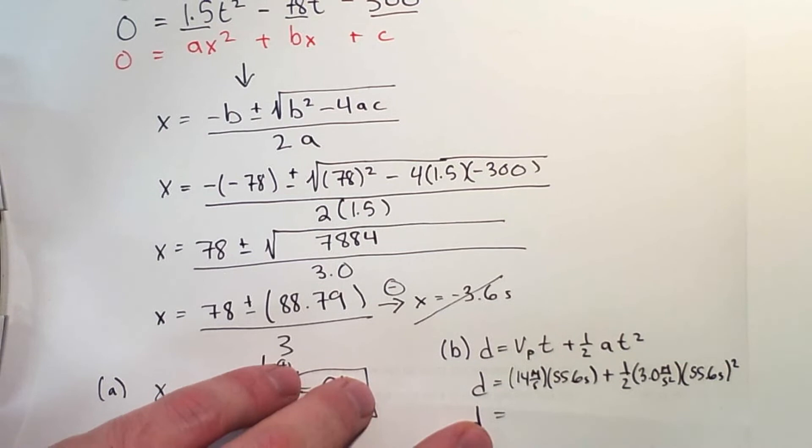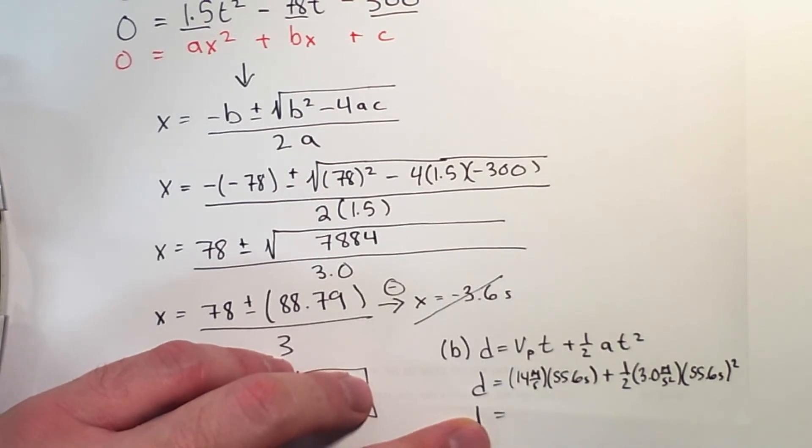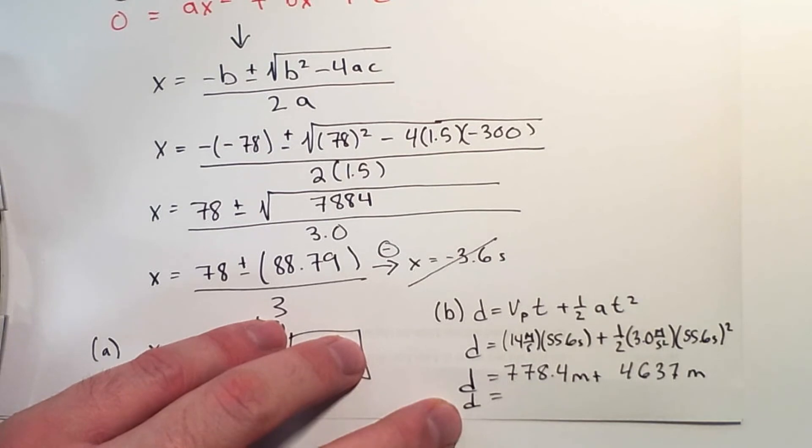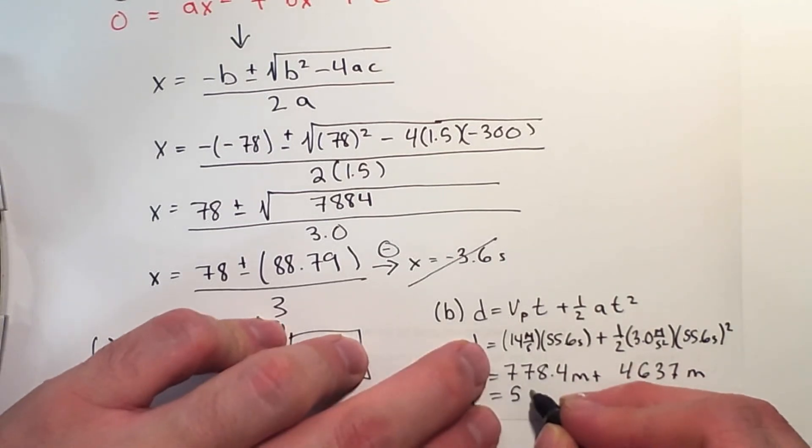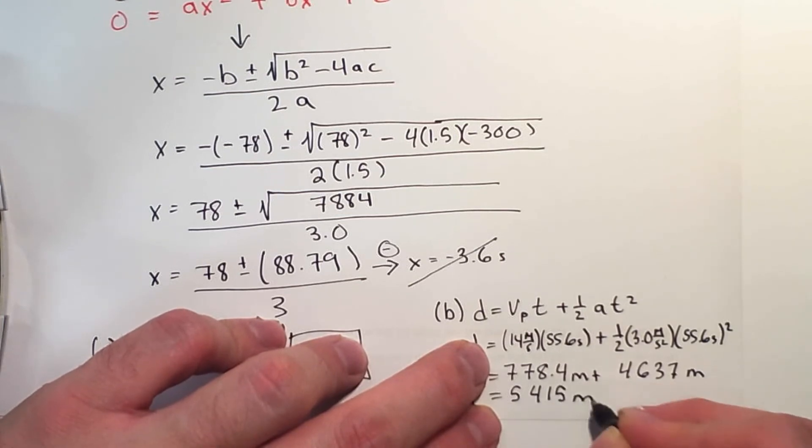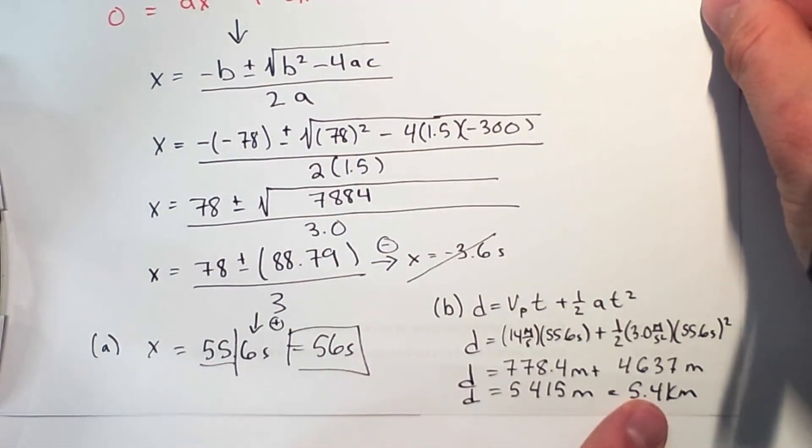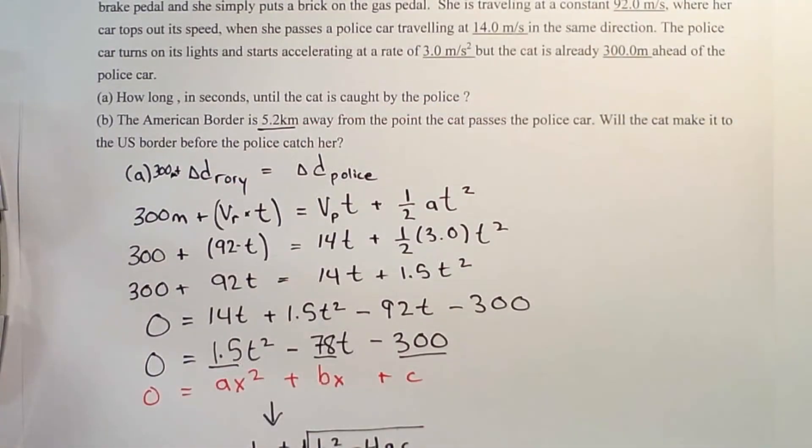And since it's from the police perspective, we'll use the police's motion. So 14 times 55.6 is 778.4 meters plus 55.6 squared times 3 times 0.5 is 4637 meters. So it's going to take 5.4 kilometers for the police to catch them. The border is only 5.2 kilometers away. Therefore, the cat is going to be able to make it across.